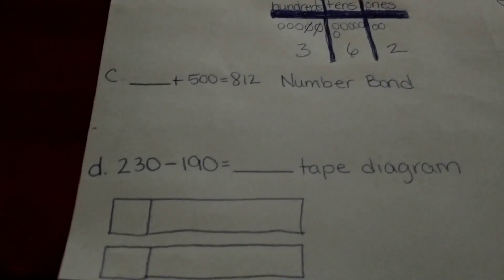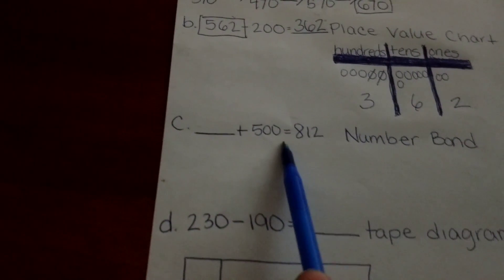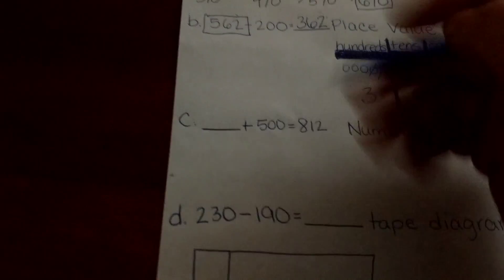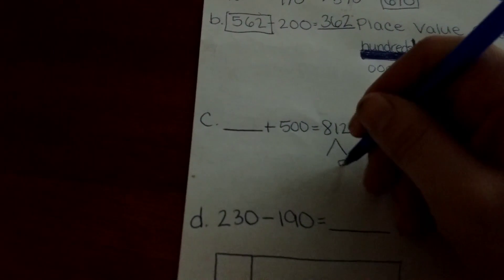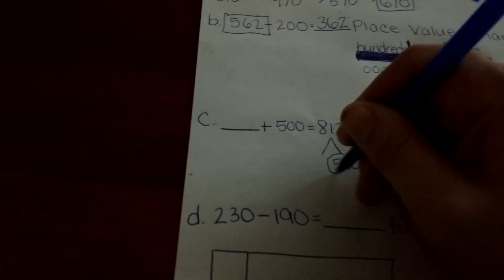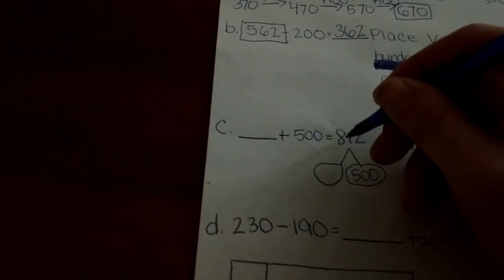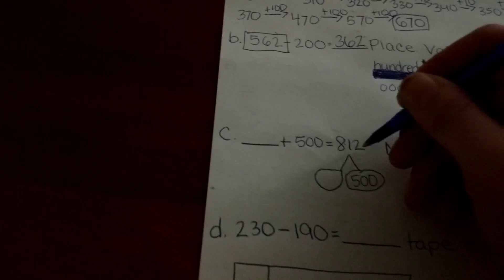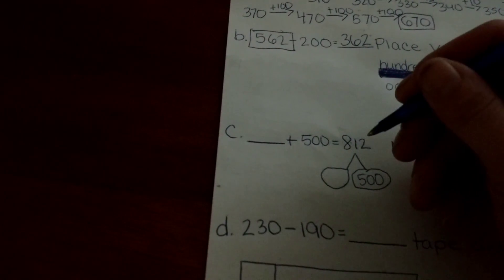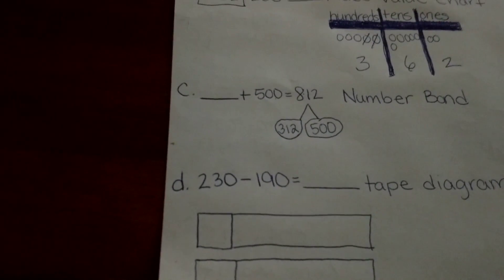Number bonds. With a number bond, letter C has your missing addend plus 500 equals 812. They separate this 812 into a number bond of 500. That represents this 500. They can find out the other part by subtracting the 800 from the 500: 1 minus 0, 2 minus 0, and they come up with 312. That would be your number bond.